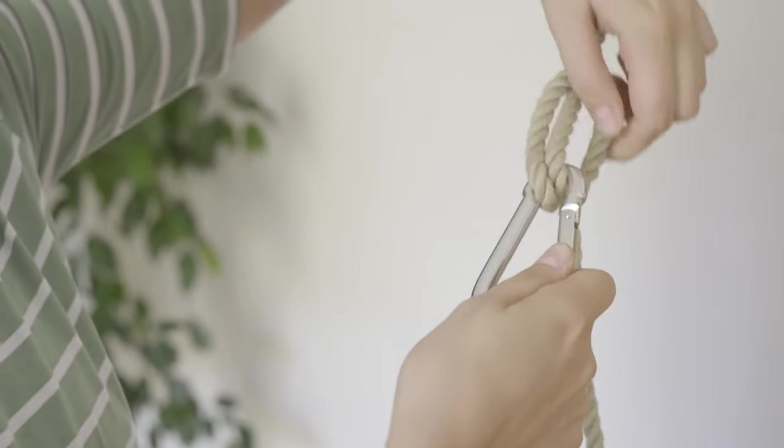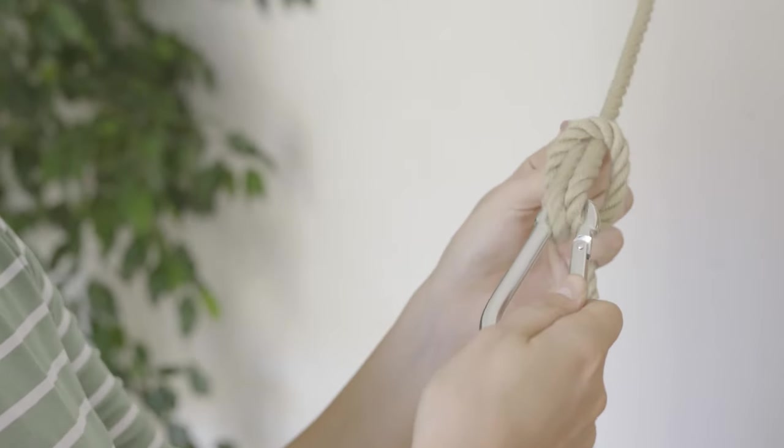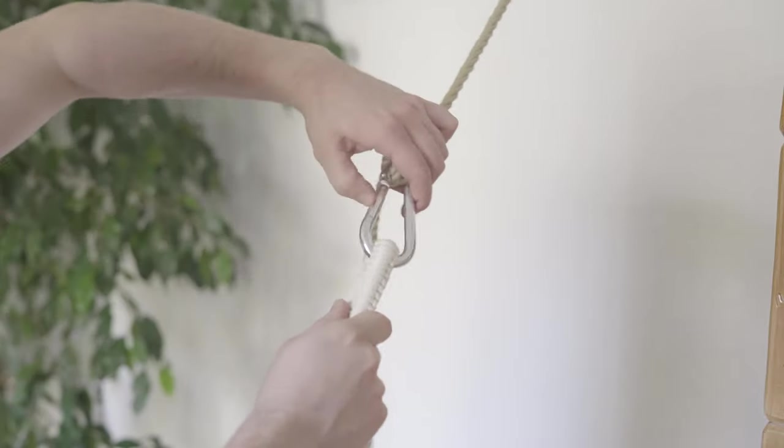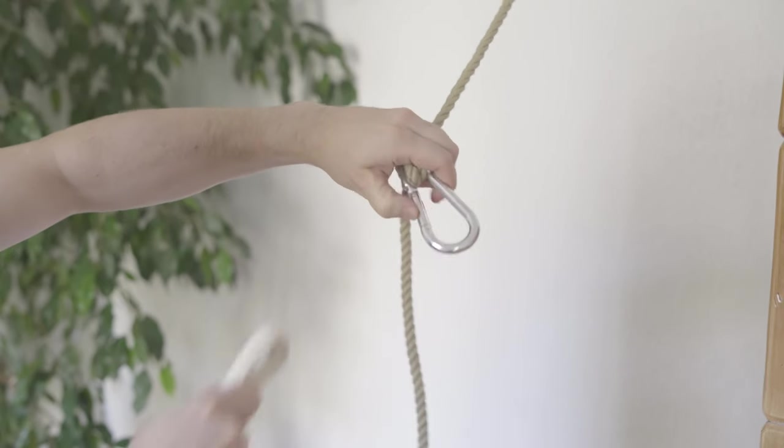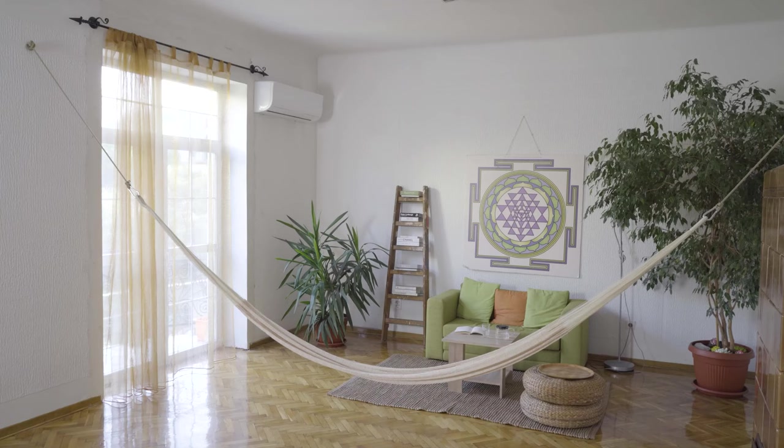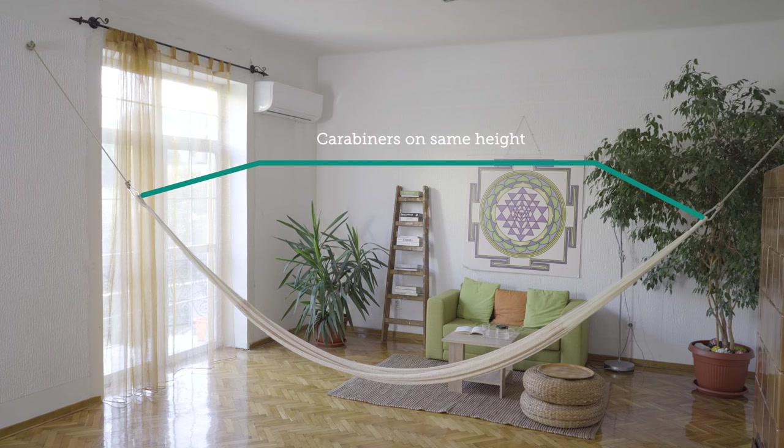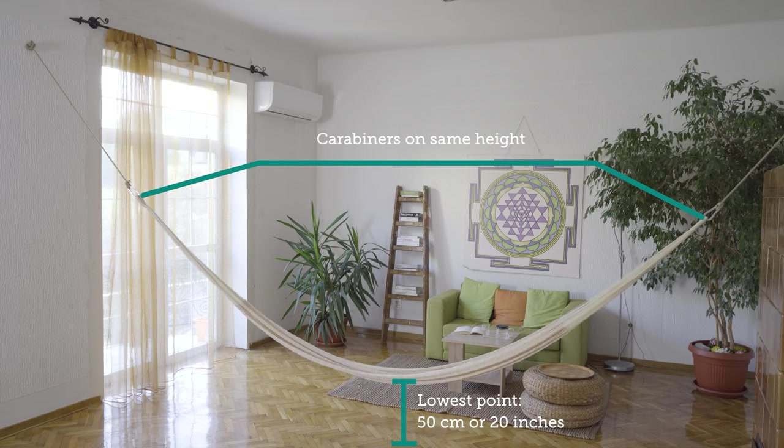The advantage of the carabiner is not only that the suspension loops of the hammock are protected from wear but also that the hammock can be set up and taken down quickly. Now we adjust the knots to ensure both ends of the hammock are at the same height and the lowest point of the hammock is at knee height, which is about 50 centimeters.